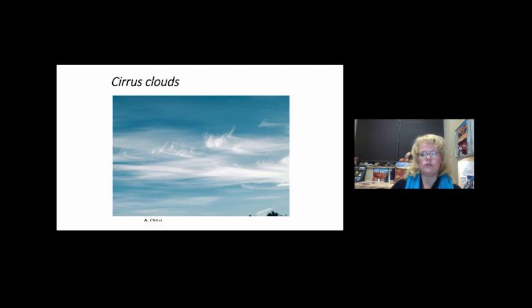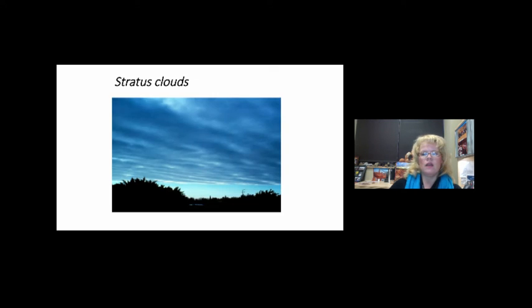Those are classic cirrus clouds. Notice how thin and feathery they are. You would not expect to have an ugly rain day or bad weather. These would be beautiful skies, fair, gorgeous weather. Stratus clouds you've probably seen at home. When we have bad storm days that are very lengthy with lots of rain, this is what they look like. Stratus are like blankets, sheets, and that's how I always remembered it: S for sheets, S for stratus.